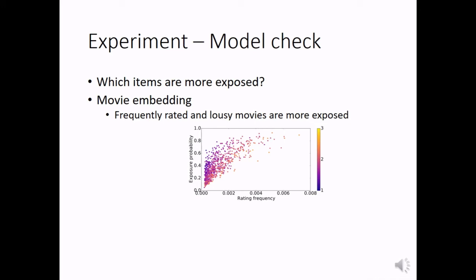We also have done some model check. Specifically, we want to check which items are more exposed. In movie embedding, we plot out all movies by their rating frequency (x-axis) and their exposure probability (y-axis). And the color here represents the average rating received by each movie. We can see that if one movie is rated frequently, then it has higher exposure probability. And for movies with the same rating frequency, movies with lower ratings will have higher exposure probability.